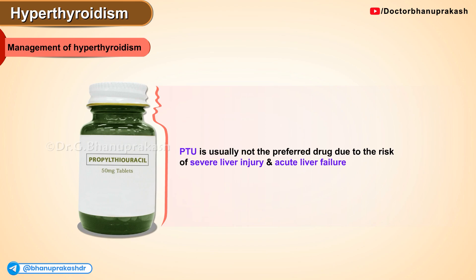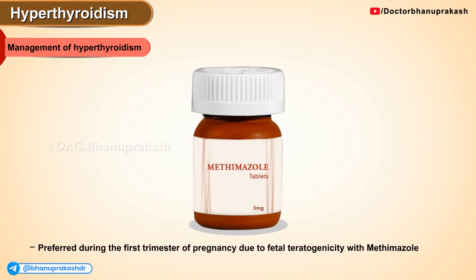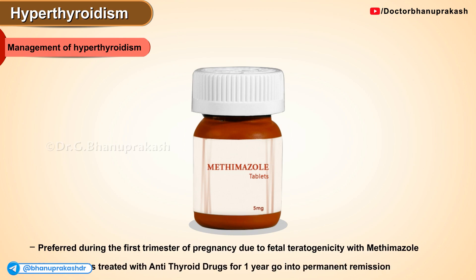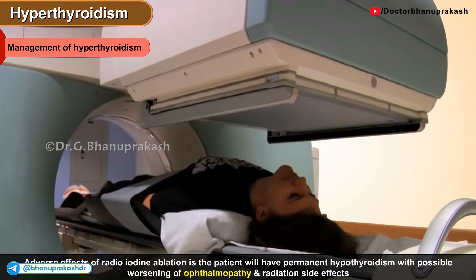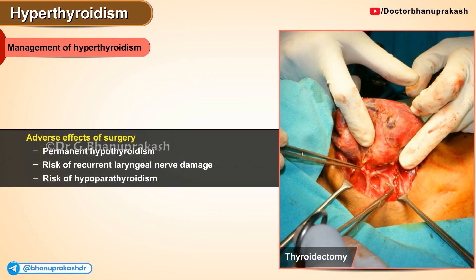Propylthiouracil is usually not the preferred drug due to the risk of severe liver injury and acute liver failure. However, it is the preferred drug during the first trimester of pregnancy due to fetal teratogenicity with methimazole. Many patients treated with antithyroid drugs for one year or so go into permanent remission. Adverse effects of radioiodine ablation include permanent hypothyroidism with possible worsening of ophthalmopathy and radiation adverse effects. Adverse effects of surgery include permanent hypothyroidism along with risk of recurrent laryngeal nerve damage and risk of hypoparathyroidism.